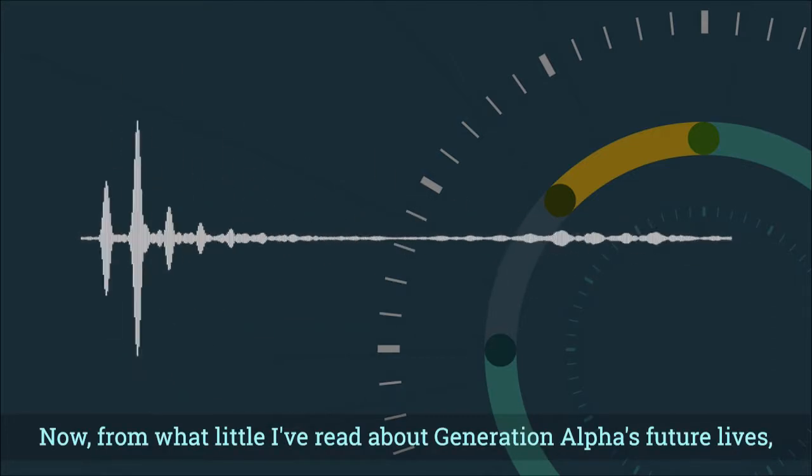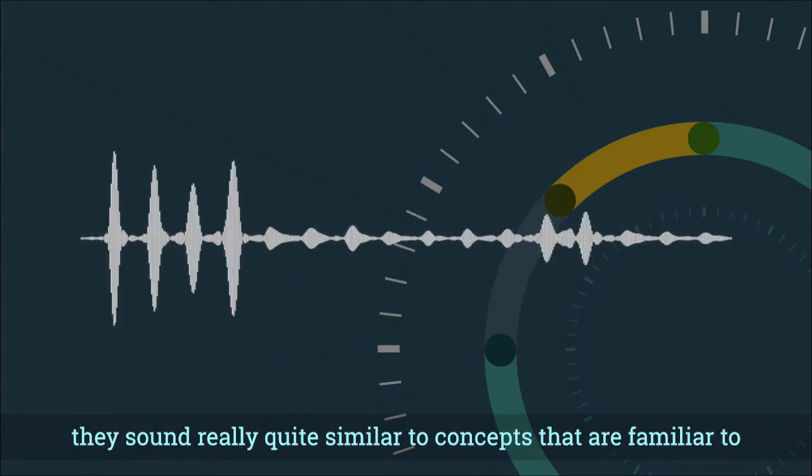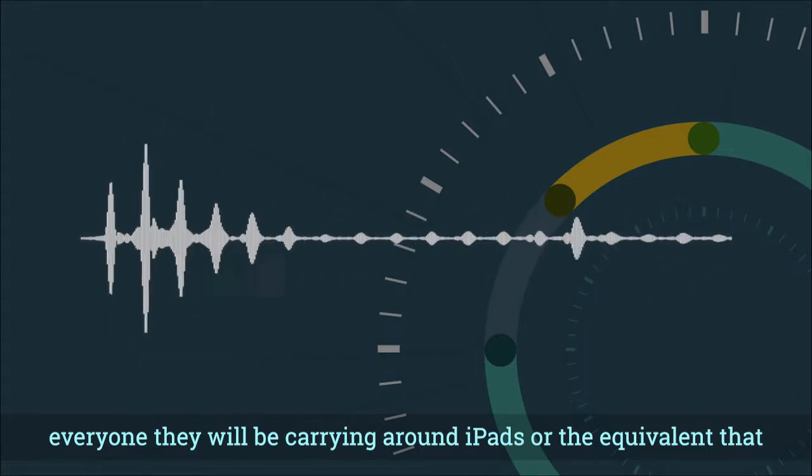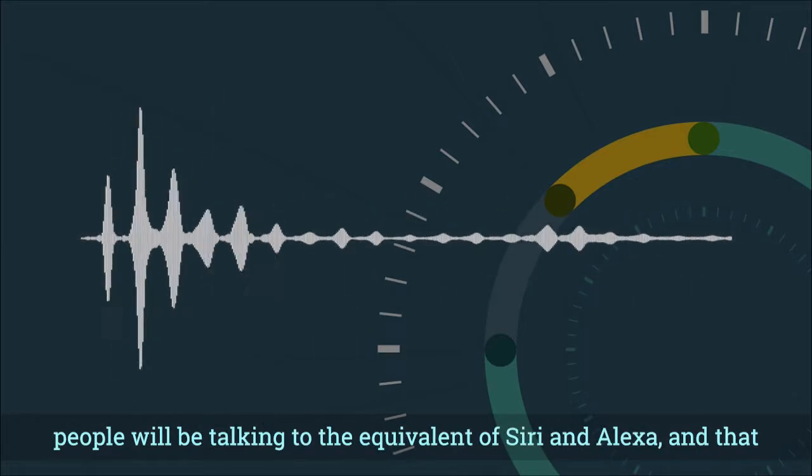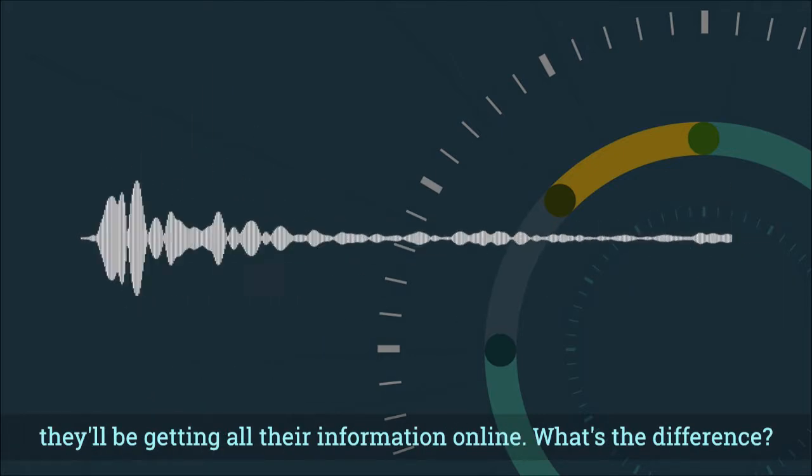Now, from what little I've read about Generation Alpha's future lives, they sound really quite similar to concepts that are familiar to everyone, that we'll be carrying around iPads or the equivalent, that people will be talking to the equivalent of Siri and Alexa, and that they'll be getting all their information online. What's the difference?